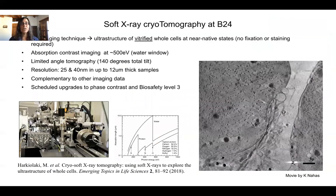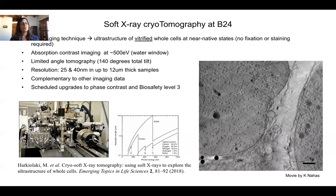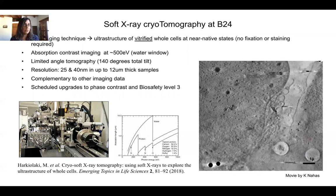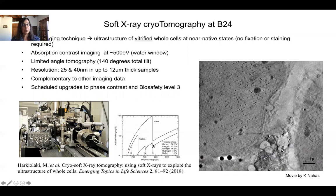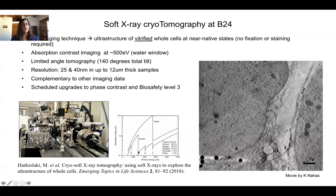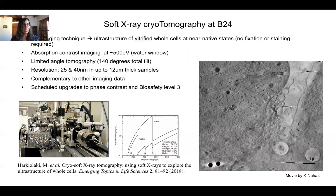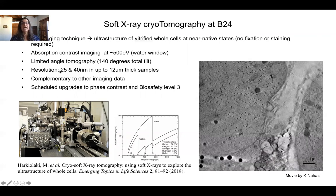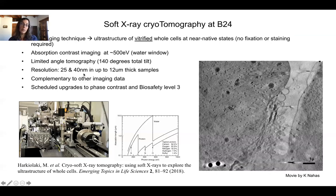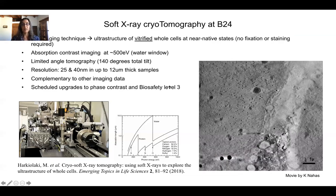Soft X-ray tomography is a 3D imaging technique that gives volumes of information, allowing us to see the ultrastructure of vitrified cells at near-native state because we plunge-freeze them. We use light at 500 electron volts — in the water window — where carbon-rich biological matter absorbs X-rays heavily whereas oxygen-rich surrounding media do not, giving very good contrast. We collect tilt series using limited-angle tomography, with optics providing both 25 and 40 nanometer resolution. We can go through fairly thick samples without needing a thin area like electron microscopy, and we have several upgrades scheduled.